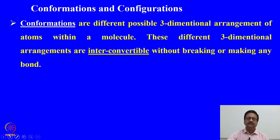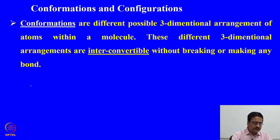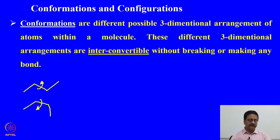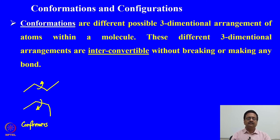Conformations are different possible three-dimensional arrangements of atoms within a molecule. These different three-dimensional arrangements are interconvertible without breaking or making any bond. For example, butane can be drawn in two different ways where the torsion angle about the central bond differs; these are called conformers. Conformers are related by an angle twist, and one can be easily interconverted to the other without breaking or making any bond.